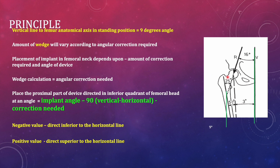What should be the track of the implant in the proximal femur? A simple formula: implant angle minus 90 degrees minus correction required. The 90 degrees represents the difference between vertical and horizontal lines. If the value is negative, direct the lag screw or blade inferiorly to the horizontal. If positive — say 5 degrees — place the implant 5 degrees above the horizontal. If minus 5 degrees, tilt it downward below the horizontal line.